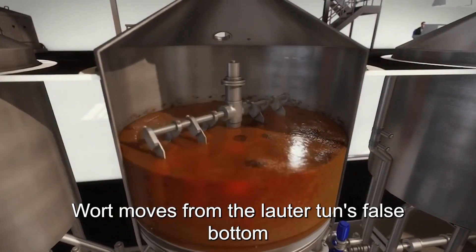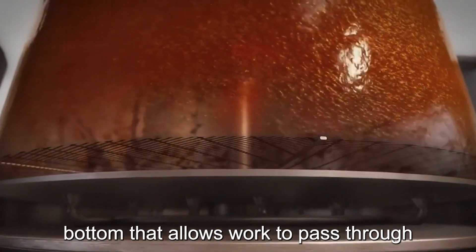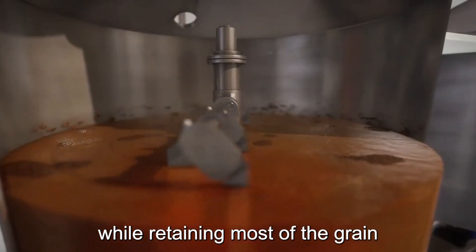Wort moves from the mash tun's false bottom to the mash tun's true bottom. False bottom is a screened bottom that allows wort to pass through while retaining most of the grain.